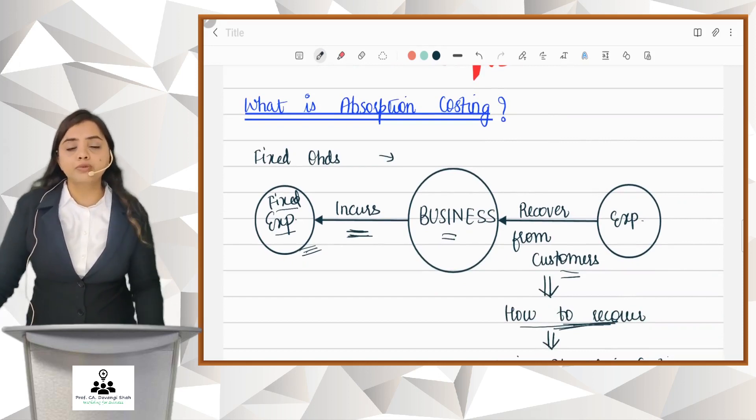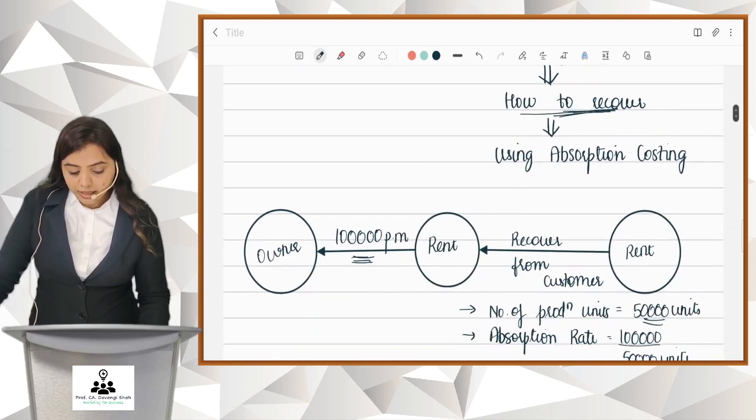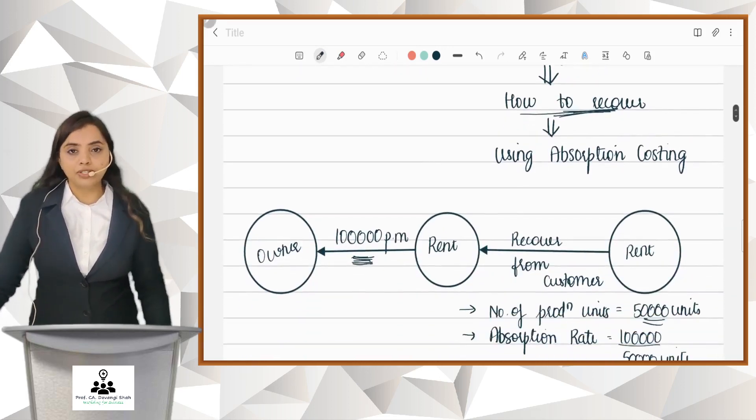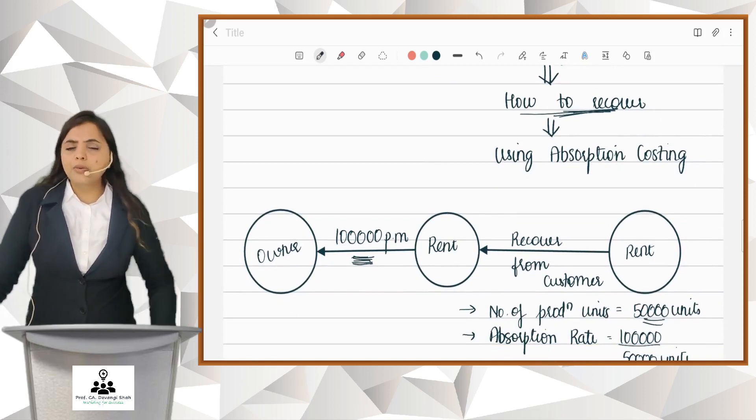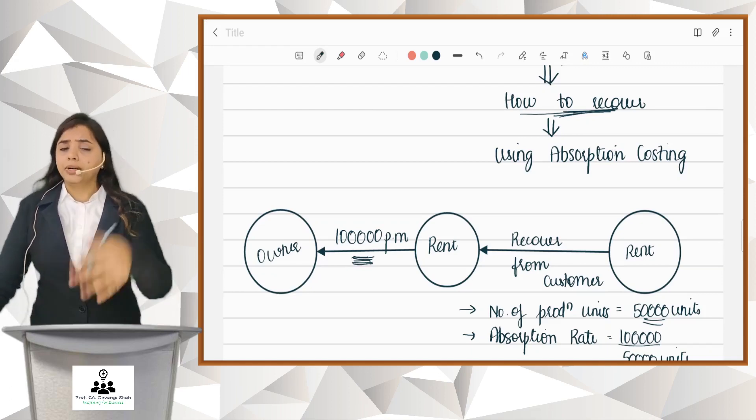How? Let's have this example. Suppose there is rent expense of 1 lakh per month which I pay to my owner, and whatever is my fixed expense, rent or whatever, it is to be recovered from the customers. It is to be recovered from every unit that I sell.